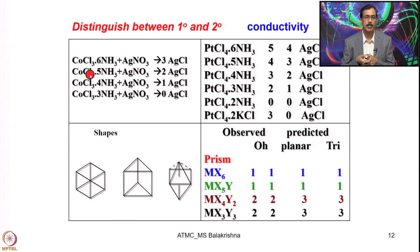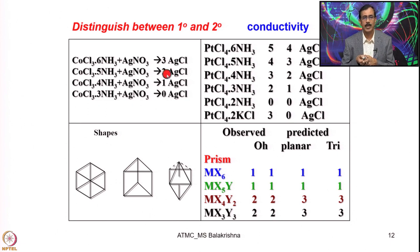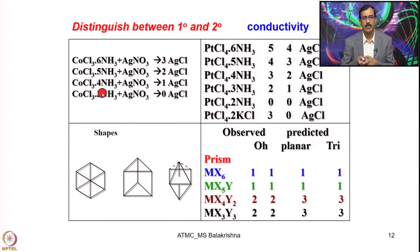He generated complexes with different ratios of chloride and ammonia. With 5 ammonia, 1 chloride became secondary valency and 2 were primary valency; treating with silver nitrate gave precipitation of 2 equivalents of silver chloride. Similarly, with 4 ammonia and 2 chloride inside the coordination sphere, 1 chloride was primary valency, giving 1 silver chloride precipitate. When just 3 ammonia and 3 chloride were present, making a neutral complex with no outer sphere chloride, there was no precipitation.